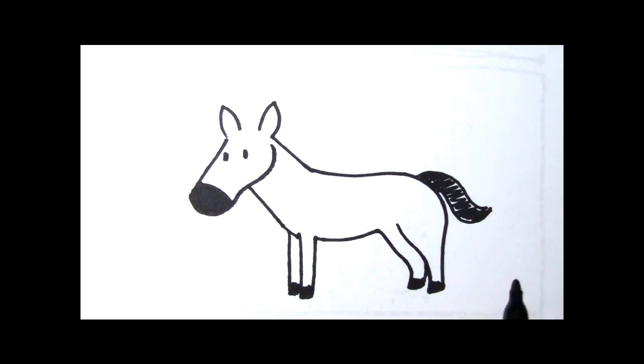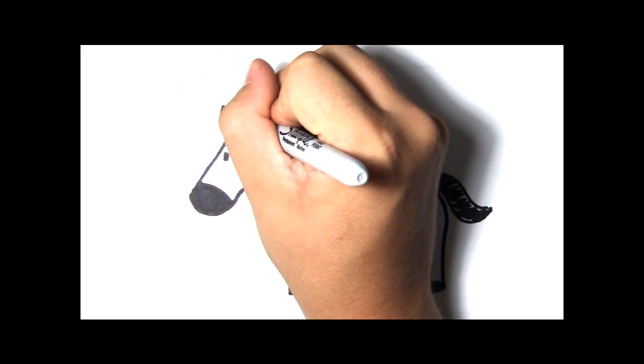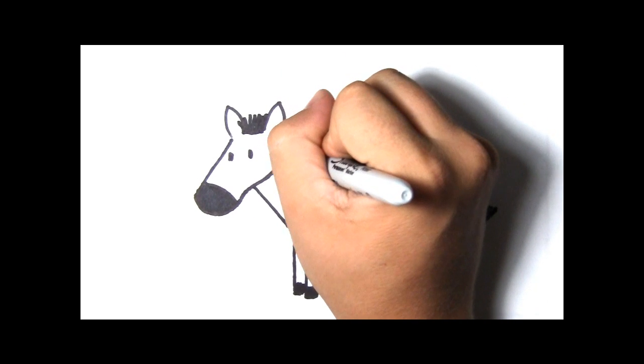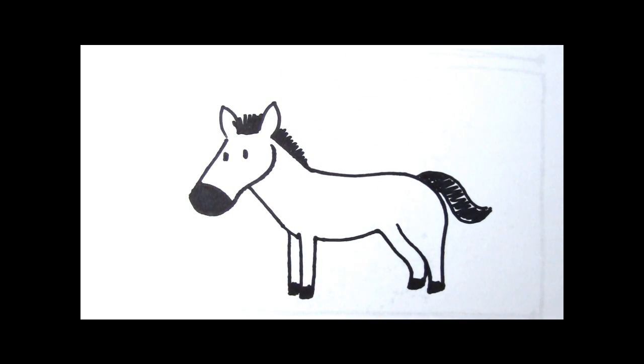It's starting to look like a zebra but zebras have hair on their head that's black and it goes all the way down their back. Hmm, it still doesn't look quite like a zebra. I wonder what it's missing.